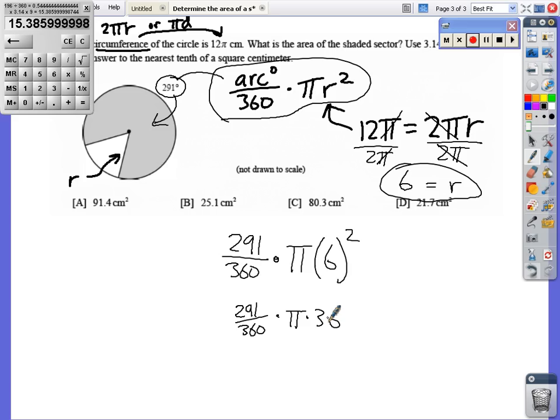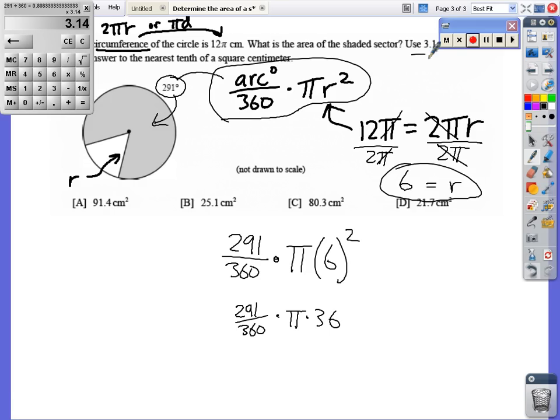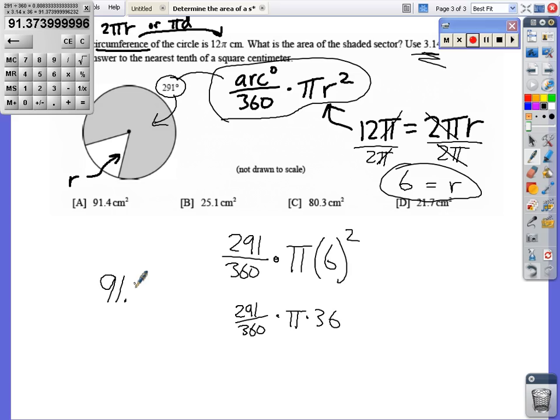I can put that in the calculator just like that. Let me clear this one. I've got 291 divided by 360, I'm going to hit equals there just to get that, I'm going to multiply that times π, but I'm going to put in 3.14 because they told me to use 3.14 for π, times 36, which was the radius squared. I've got the area of that shaded sector is 91.37. I'm going to round it to the nearest tenth - that's 91.4 cm².